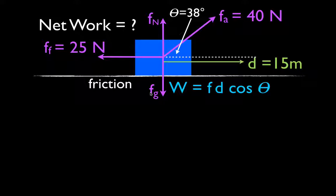To do that, we're going to have to use the work equation: W = Fd cosθ — force times distance times the cosine of theta. Now, it's important to remember what theta is: theta is the angle between the displacement and the force.